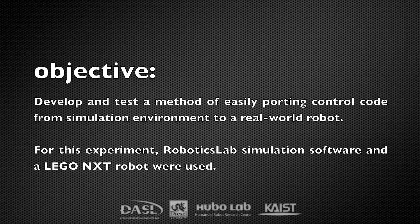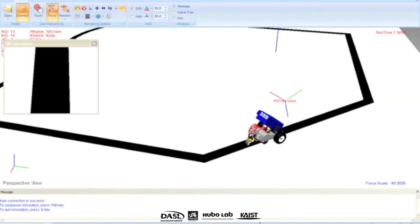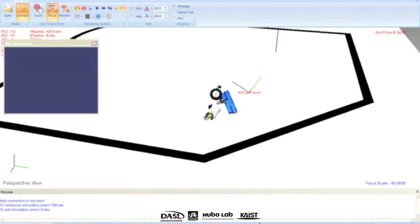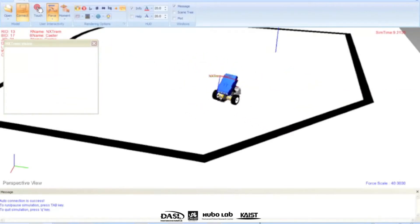The simulation environment Robotics Lab is a commercially available software used mostly for its dynamics engines, and the LEGO NXT was chosen as an experimental platform because of its general availability and ease of application.